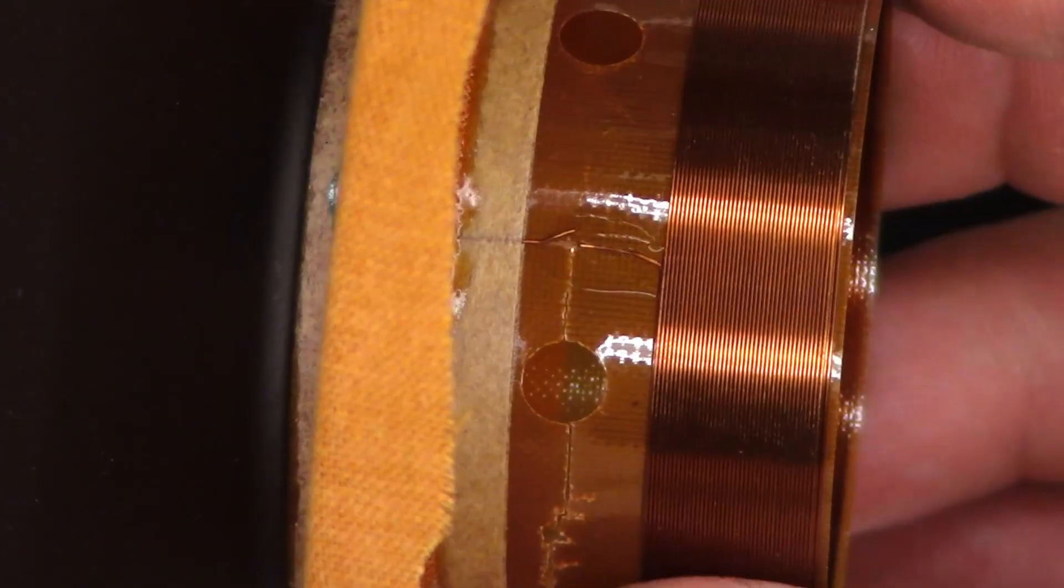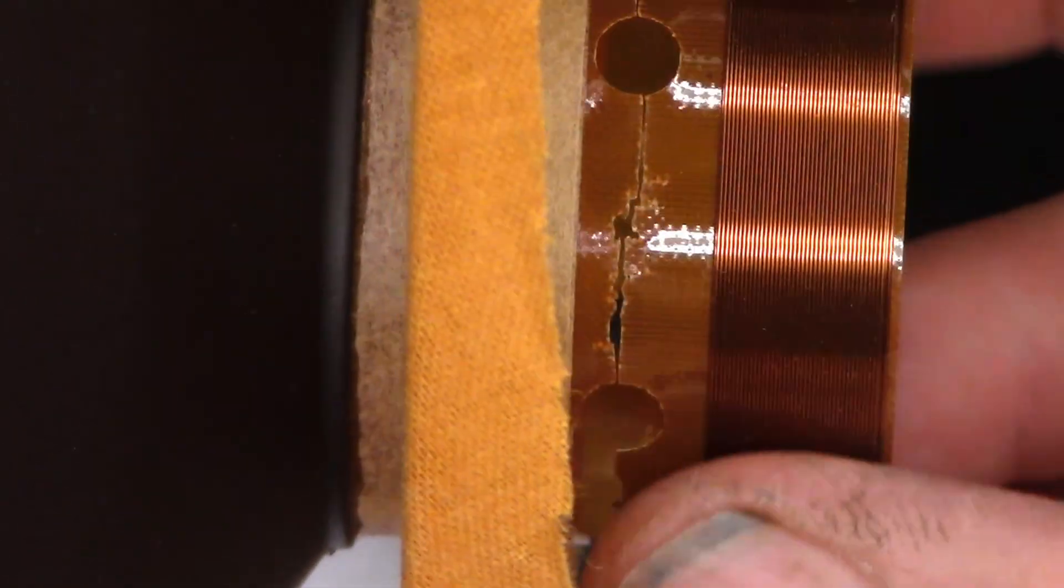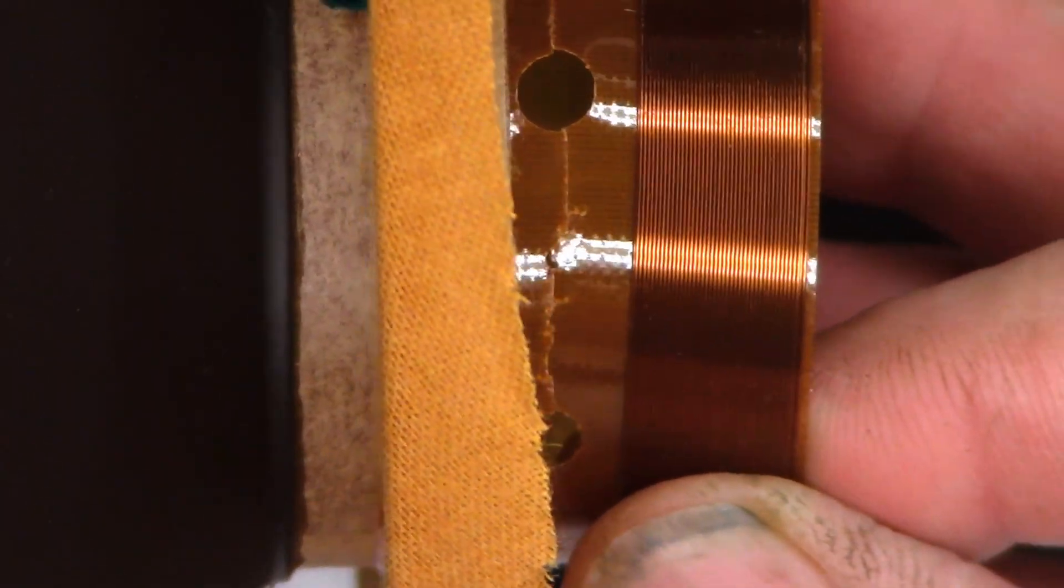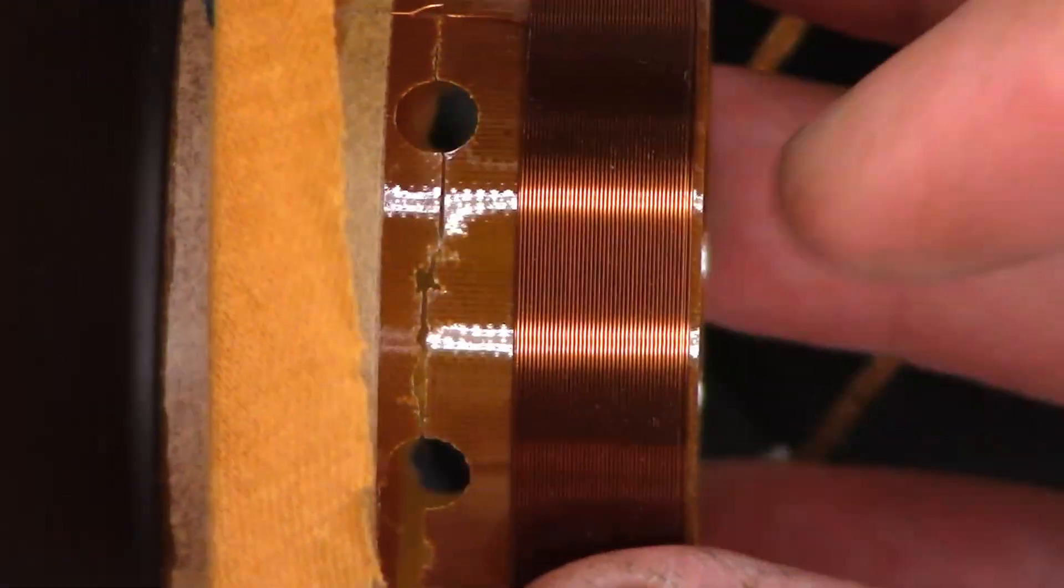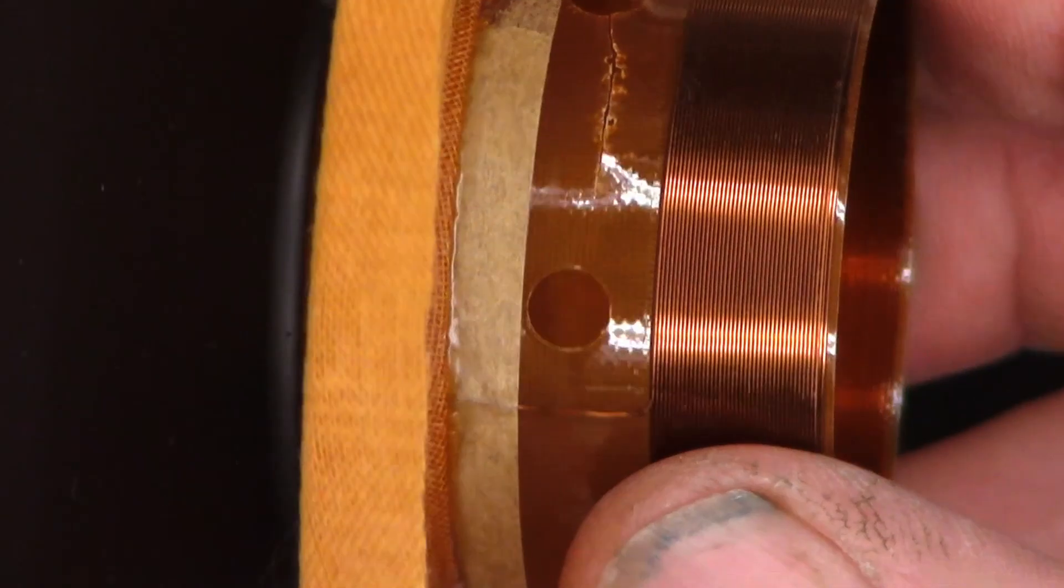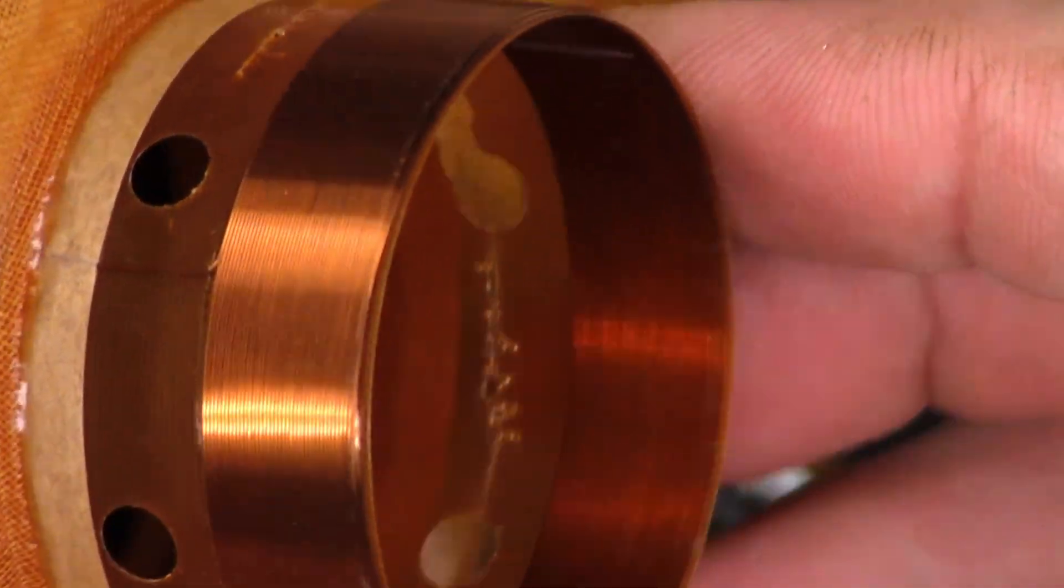But at least we do have resolution as to why these failed. There is the other one, same thing. Not quite as bad, but definitely had a diagonal thrust on it instead of just an axial thrust. Yeah, it's toast. Too bad it wasn't wound on like an aluminum bobbin. Probably would have been okay. But it's wound on this phenolic bobbin.